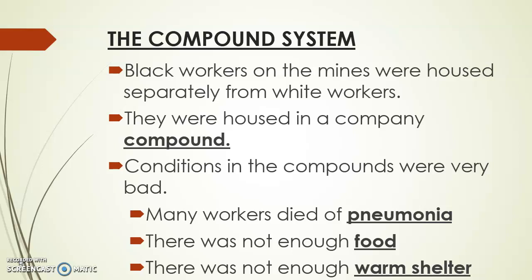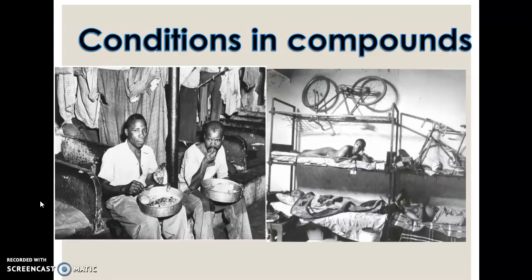I'm going to show you an image of a compound. Over here we have an image of the conditions in the compound. You can see that they are not properly fed — there's no proper place to eat. You kind of have to sit in your little section and eat out of this bowl. The food was very bad as well. You can see that they had to do their washing and hang it up in this small little space. The space doesn't look very comfortable. This is a different image of a compound — people are laying in bunk beds, not very comfortable, not very freeing. It's basically not decent accommodation for humans. It was just built as a place to keep the workers while they were working on the mines.